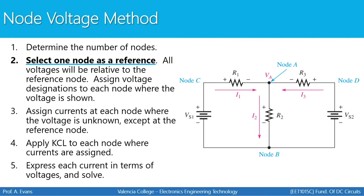Here's where node voltage differs from the branch current and loop current methods. We're going to express each current in terms of a voltage. In the other two methods, voltages were expressed in terms of current as I times R. The node voltage method is the reverse — we take a current and write it as V over R. Then we'll have a system of equations that we can solve.